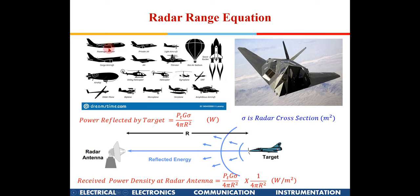The amount of energy reflected from the target depends on the surface area it presents. A large transport aircraft presents a very large area, while a small fighter aircraft or helicopter presents much less. Based on the received signal we can estimate what kind of aircraft it is. Modern stealth aircraft use surface structures designed so that incident waves are not reflected back in the incident direction — the surface angles scatter the waves elsewhere, making it difficult for radar to detect them. These surfaces are also coated with anti-radiation materials that absorb EM radiation and minimize radar signature.